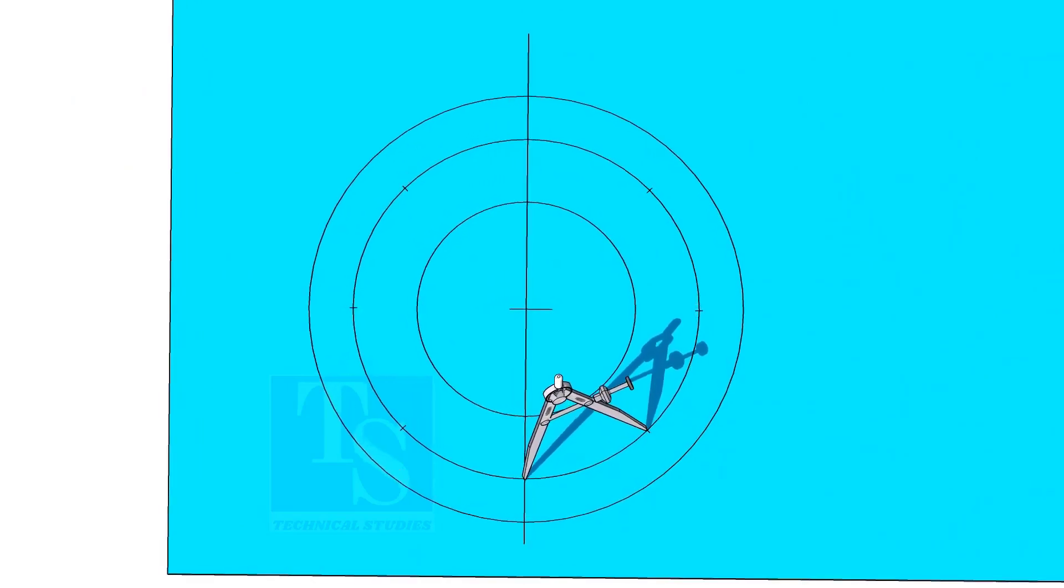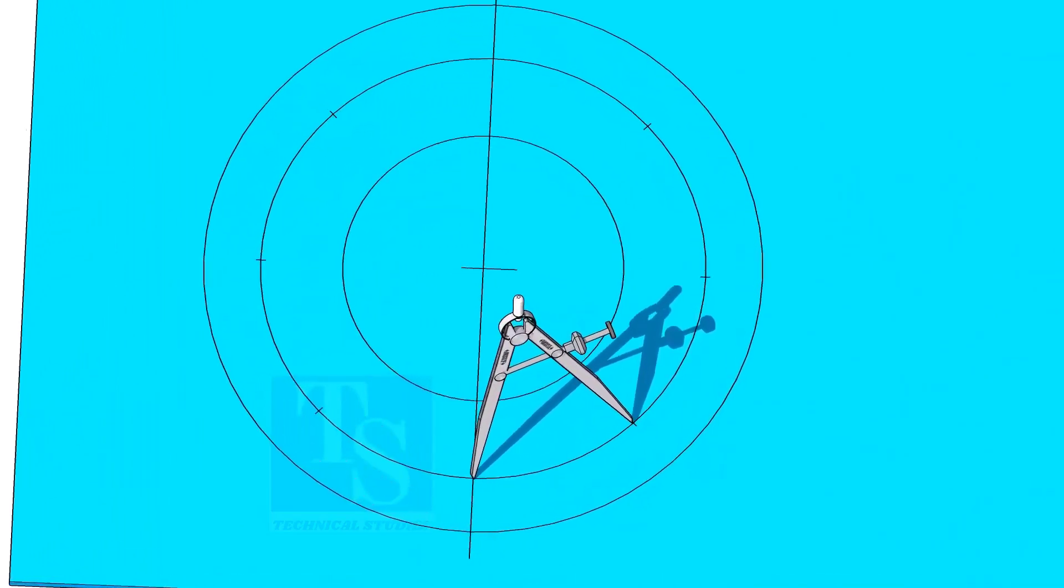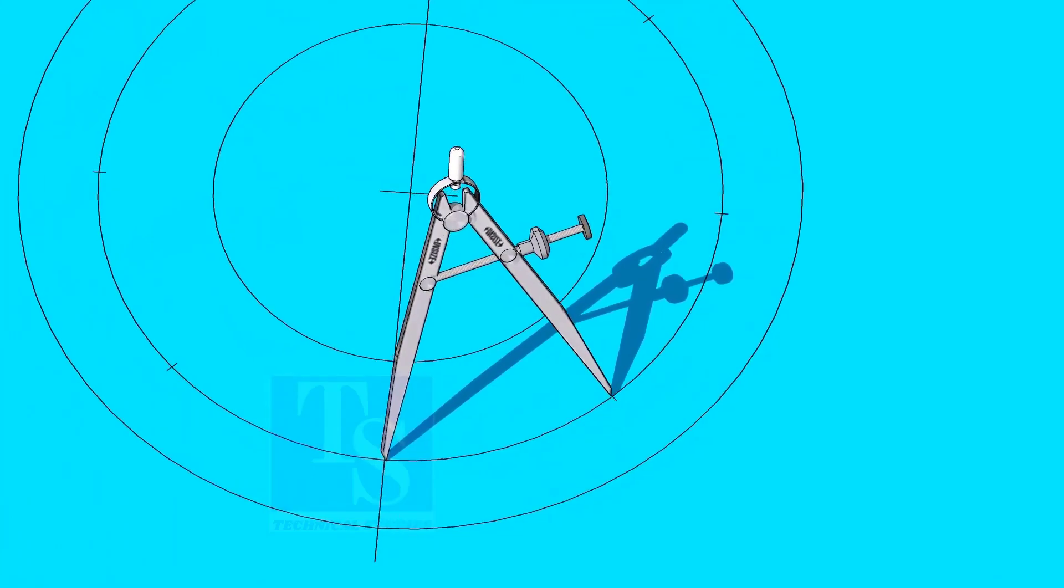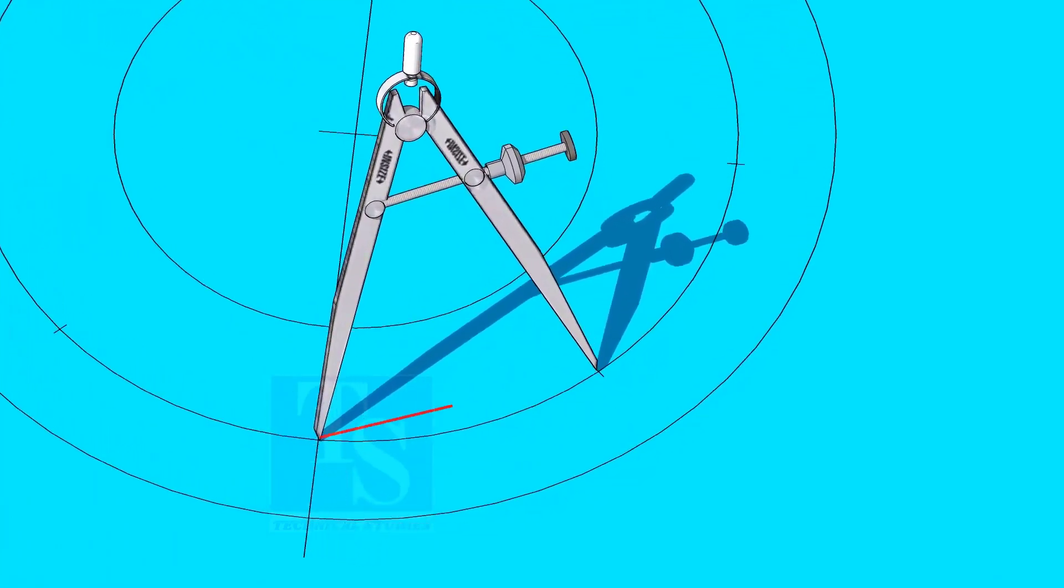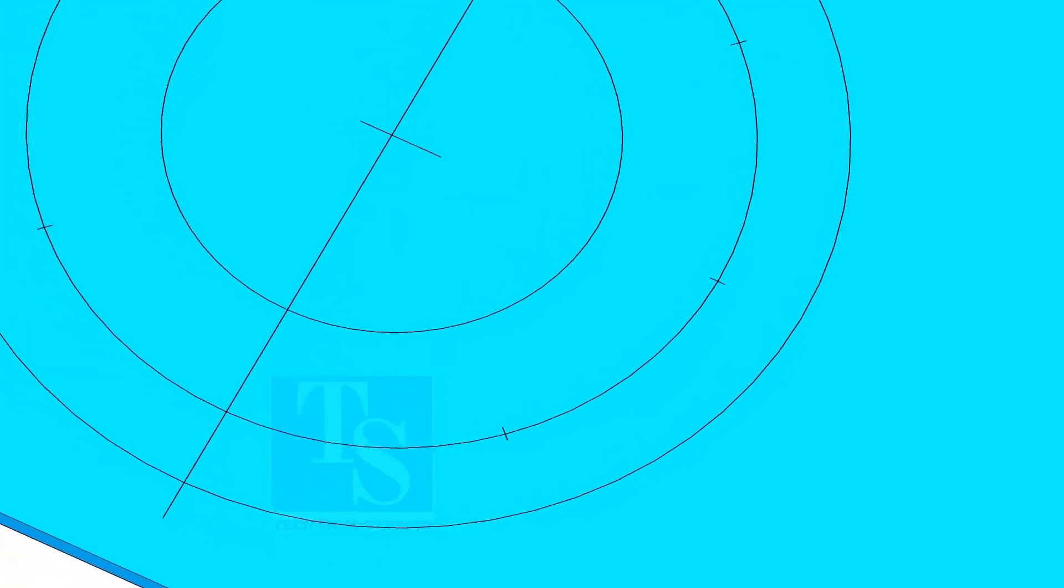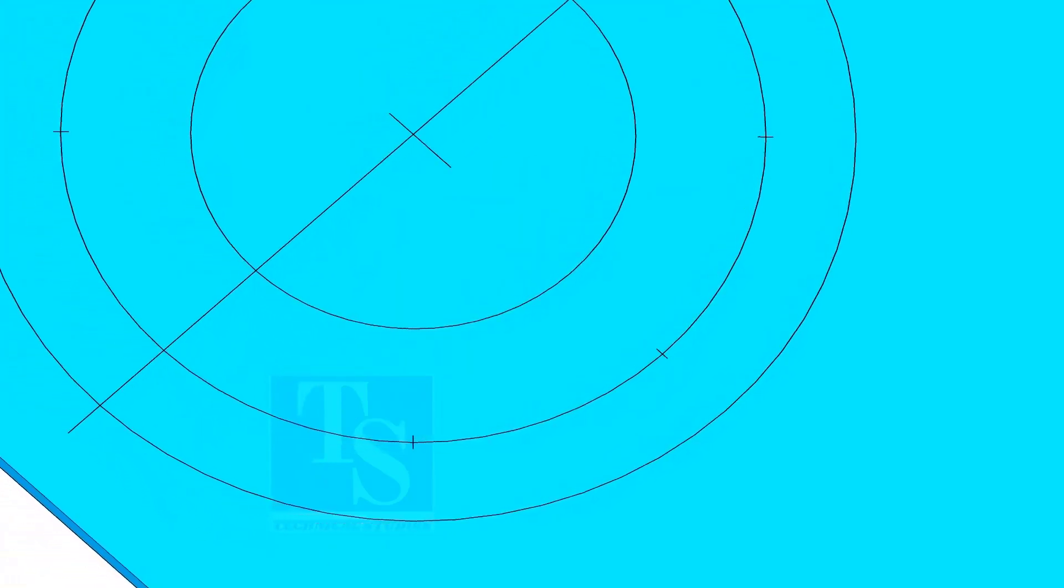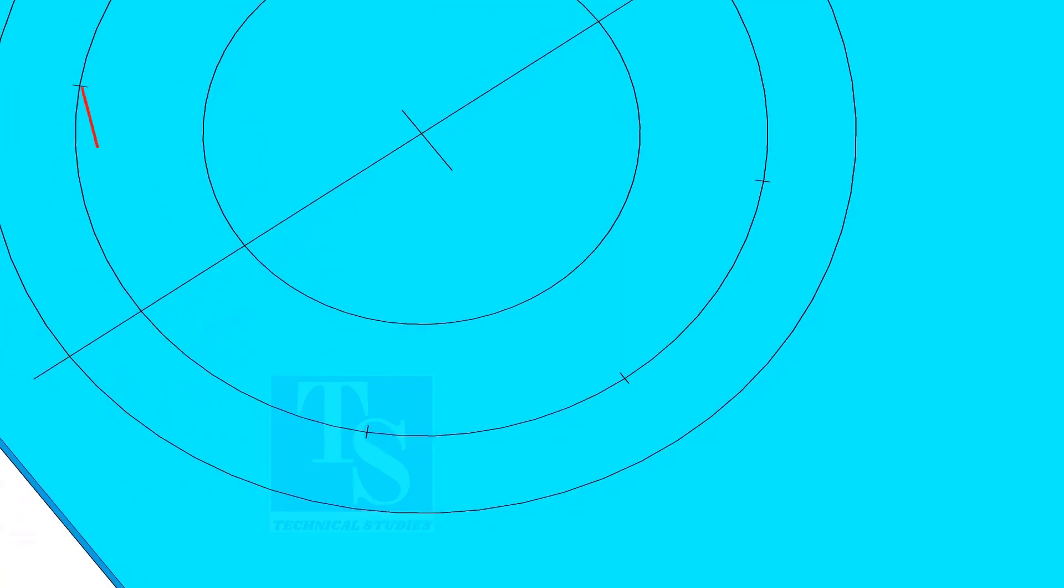Adjust the divider to 192.8 millimeters and divide the PCD into 8 parts. Dividing the circle is not an easy job. It requires good practice. Make sure the last segment is as same as the other segments.